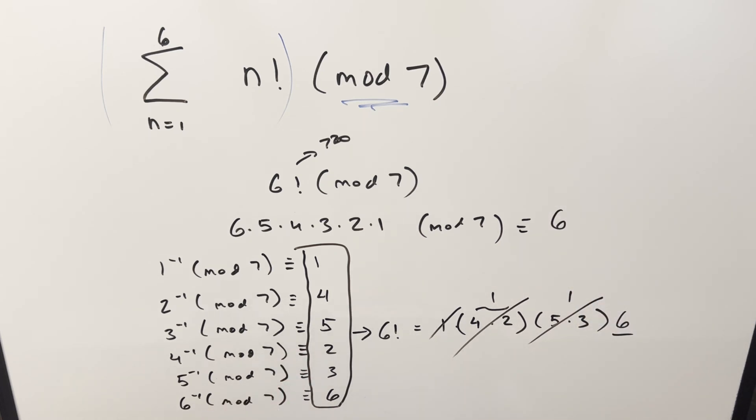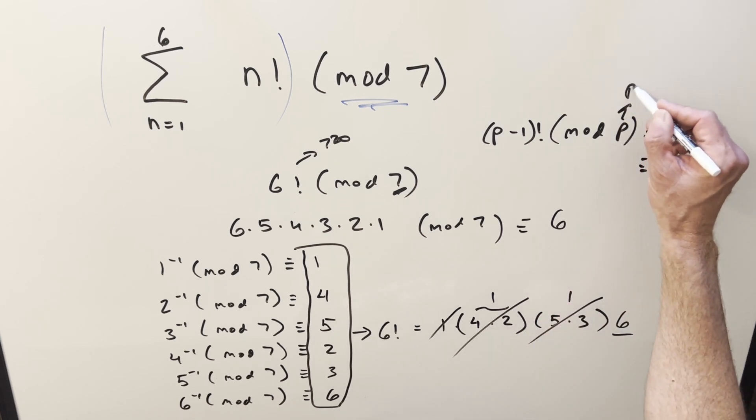But this trick has a name. This is actually Wilson's theorem. It works every time when that number is a prime. So it says, well it doesn't actually quite say this but as part of it it tells us when we have p minus 1 factorial mod p this is going to be congruent to just p minus 1 or it's congruent to minus 1 right because this is minus 1 mod p when this thing is a prime.